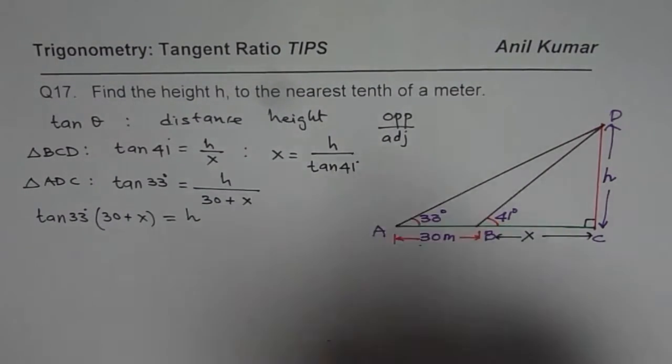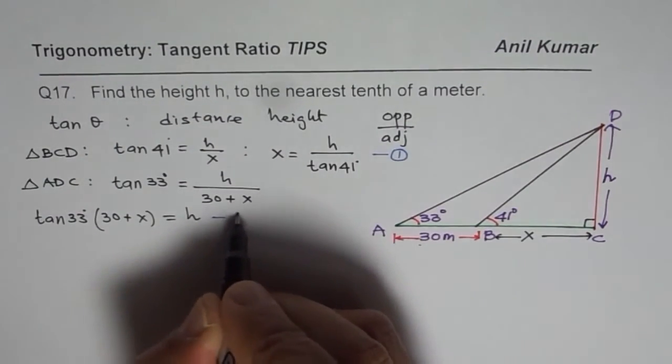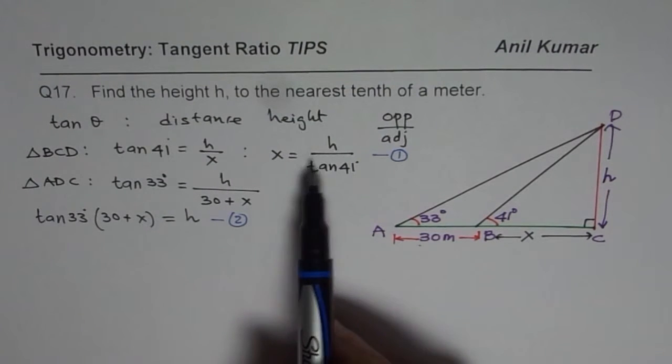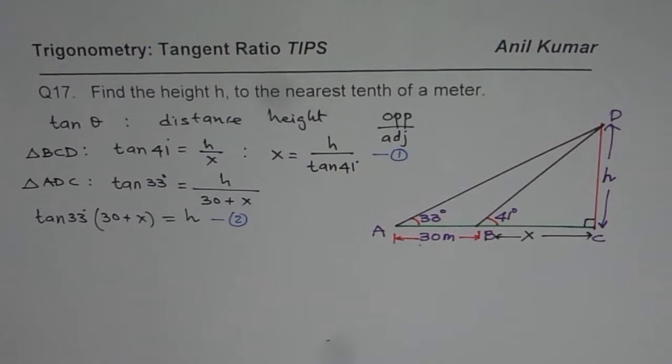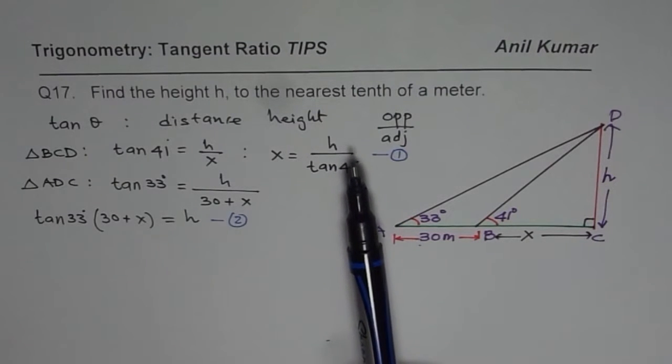As you can see we have two equations and two variables. This is equation 1 and that is equation 2. In both equations we have a relation linking x and h. So at this stage you have a couple of options. Since we need to find h, we can eliminate one of the variables and find the other.